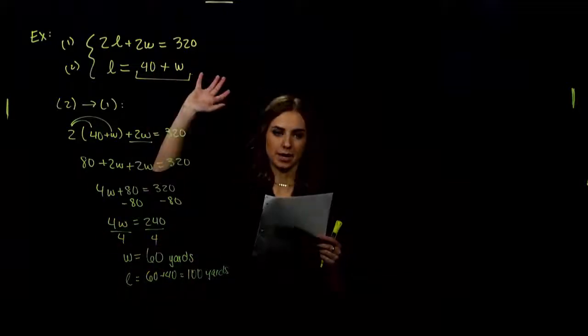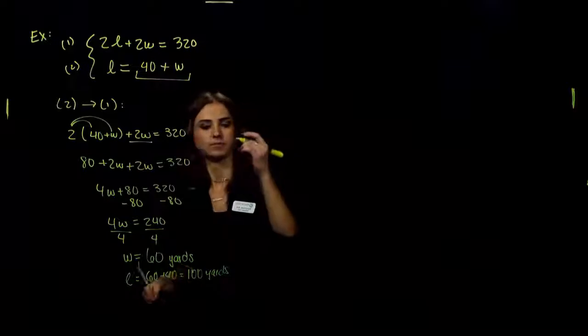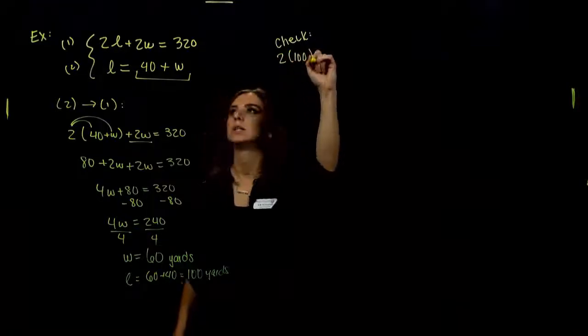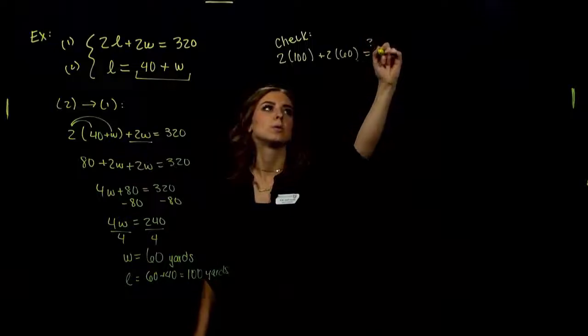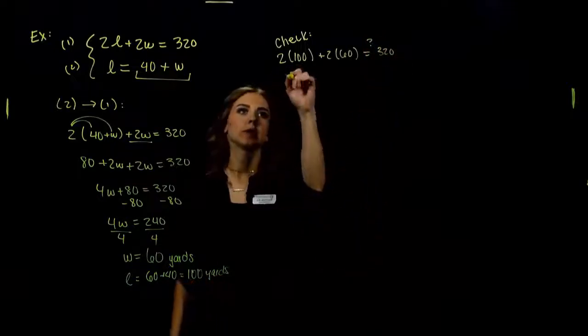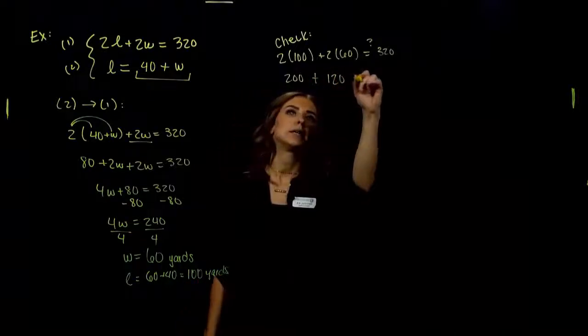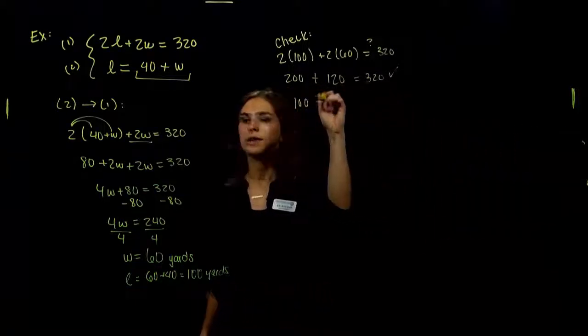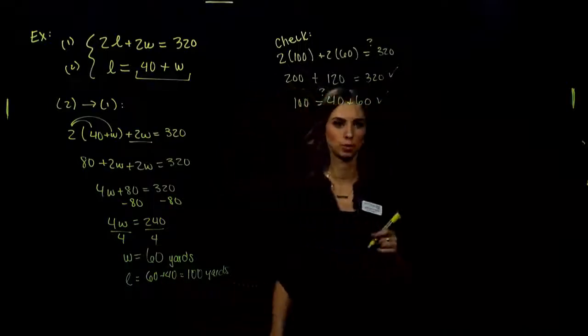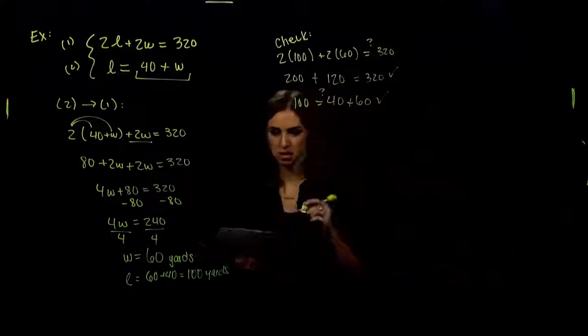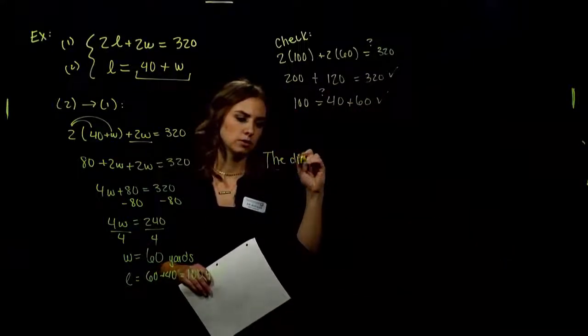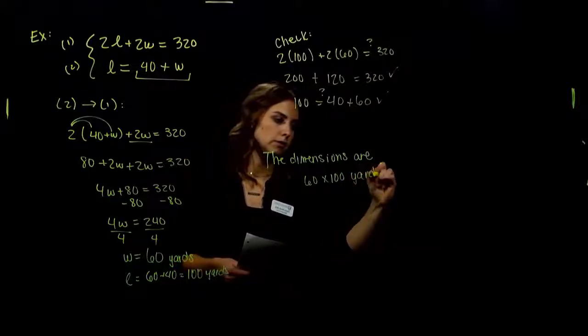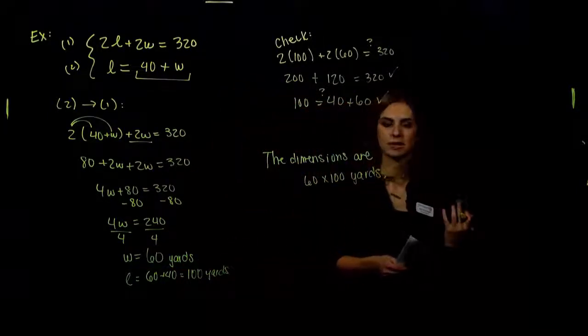How can we check? Plug them in, make sure both equations are satisfied. And at the end we want to write a little sentence. So we can check. We might as well. Into the first equation, 2 times 100 plus 2 times 60. Is that really equal to 320? 2 times 100, we're talking about 200. And another 120, that gets us to 320. That one's satisfied. For the second length, 100, is that really 40 plus 60? Sure is. Both of them are satisfied. So the sentence at the end can be really short. All we have to say is, the dimensions are 60 by 100 yards. Fits within our parameters. We checked. It satisfies both of them at the same time.